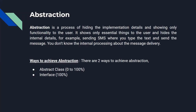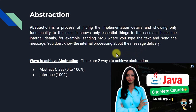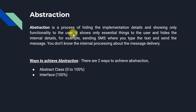Our first key point: abstraction is the process of hiding the implementation details and showing only functionality to the user. It shows only essential things to the user and hides the internal details — we only show what the user needs for their work.